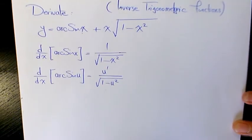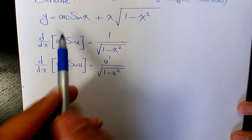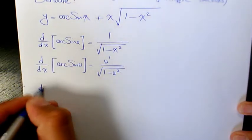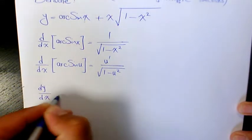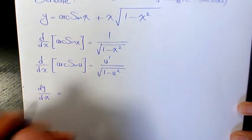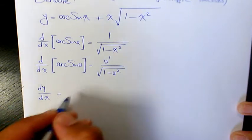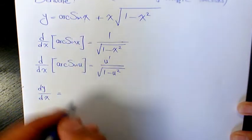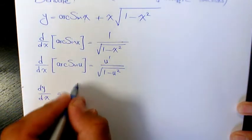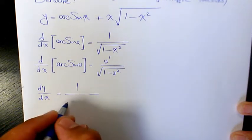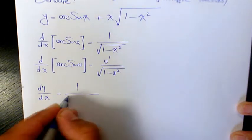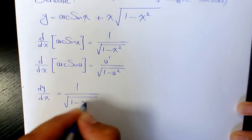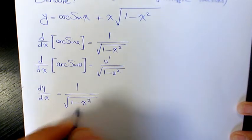So what we can do now: dy over dx, or y prime, equals the derivative of arc sine x, which is going to be 1 over square root of 1 minus x squared.